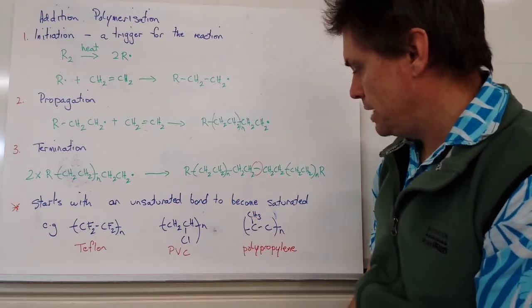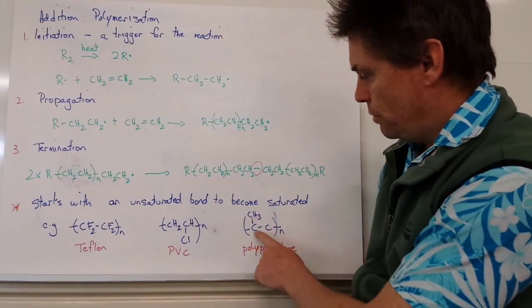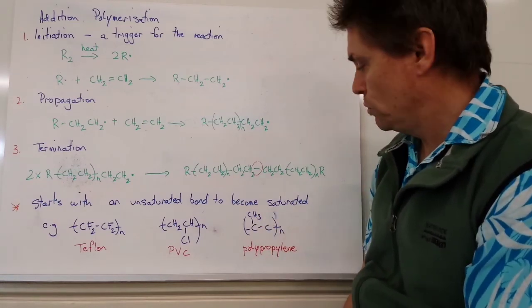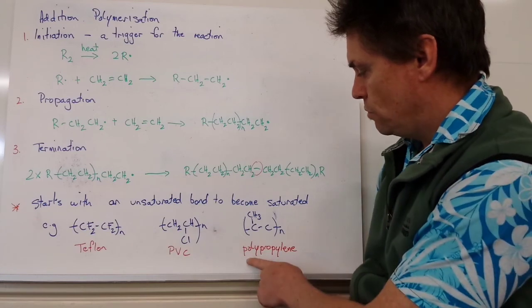Our third example, we've substituted a hydrogen for another methyl group. So we've actually got one, two, three carbons in here, so it's a propyl group. So when we polymerize this monomer, we form what's called polypropylene.